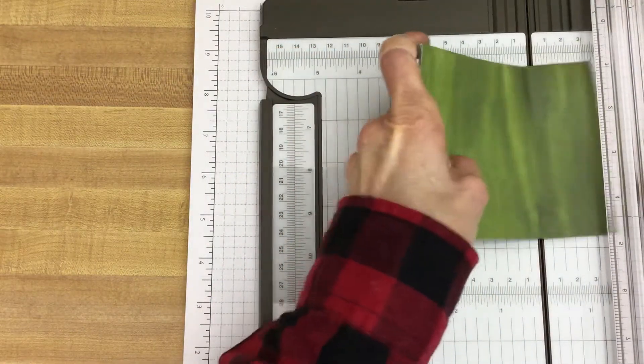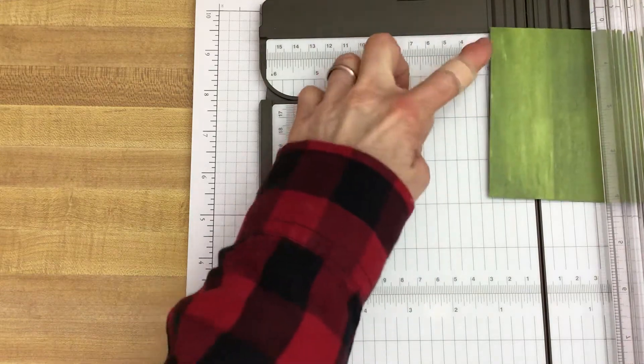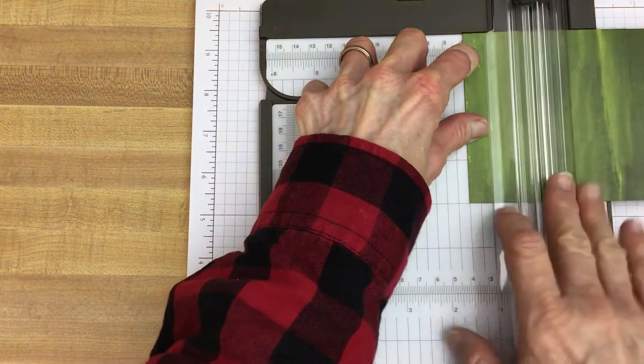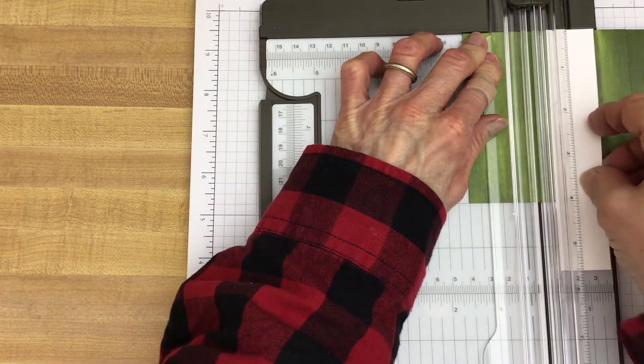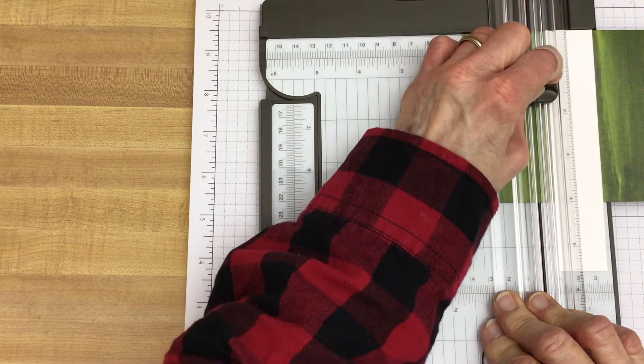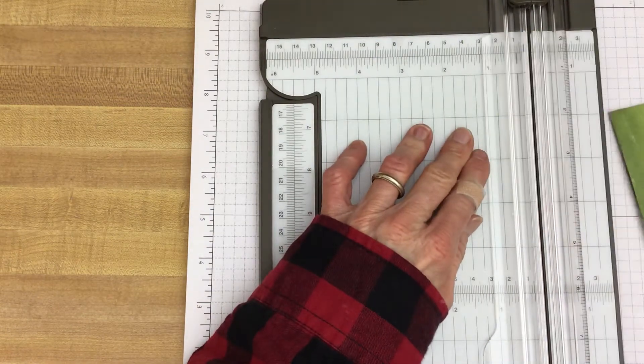There it is, 1 and 1/2 inches. Now we're going to flip it right over. Put this right back in here. The folded edge up against here at 1 and 1/2 inches. Close it. Get my little helper here. And cut down to 1 and 1/2 inches. And that's all there is to the cutting.